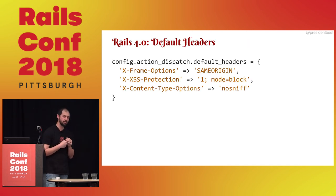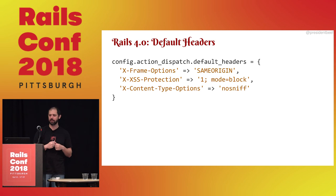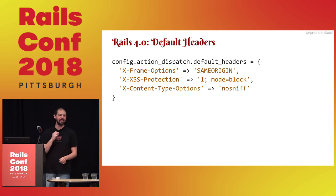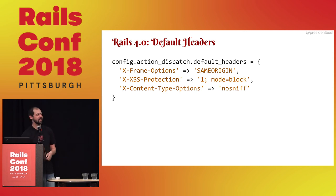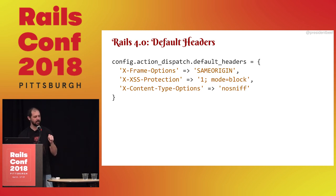Rails 4.0 also added some default security headers. X-Frame-Options prevents a site from putting your site inside an iframe and performing clickjacking attacks. The XSS protection header is essentially useless, but we set it anyway — all browsers do it by default. X-Content-Type-Options tells Internet Explorer to stop guessing that JSON is actually HTML even when you're telling it that it's JSON.